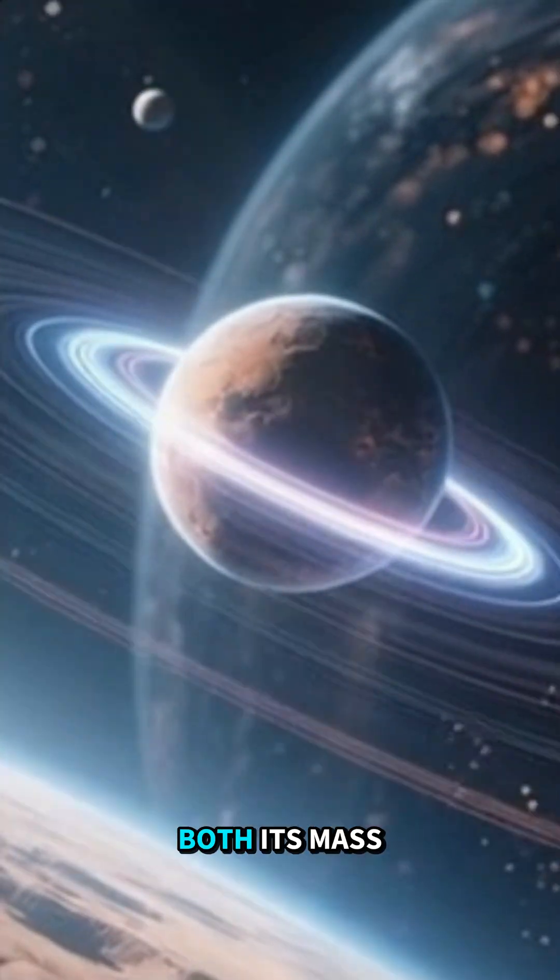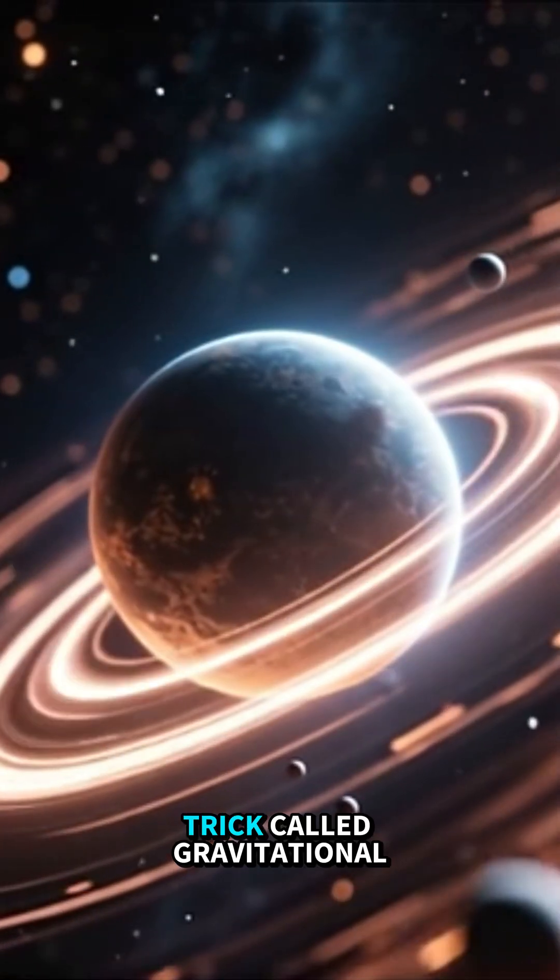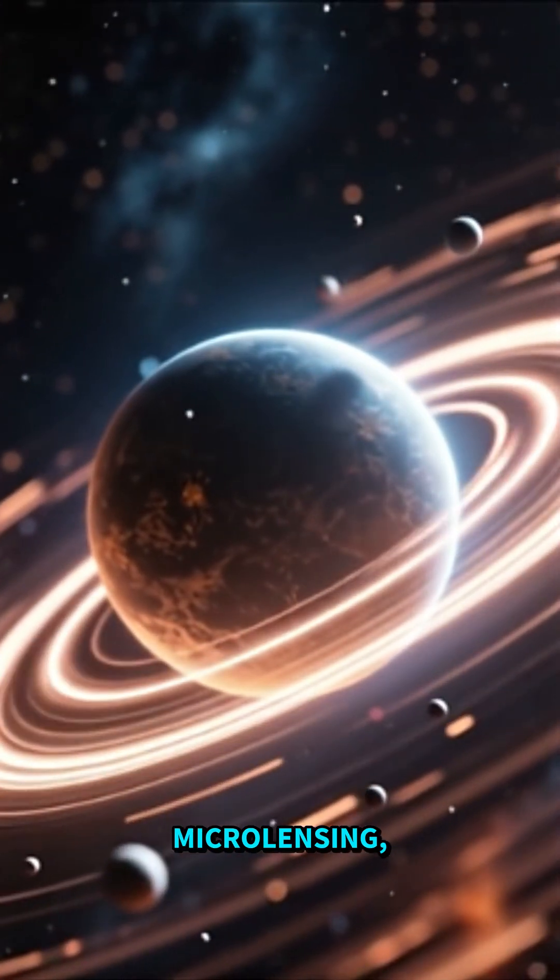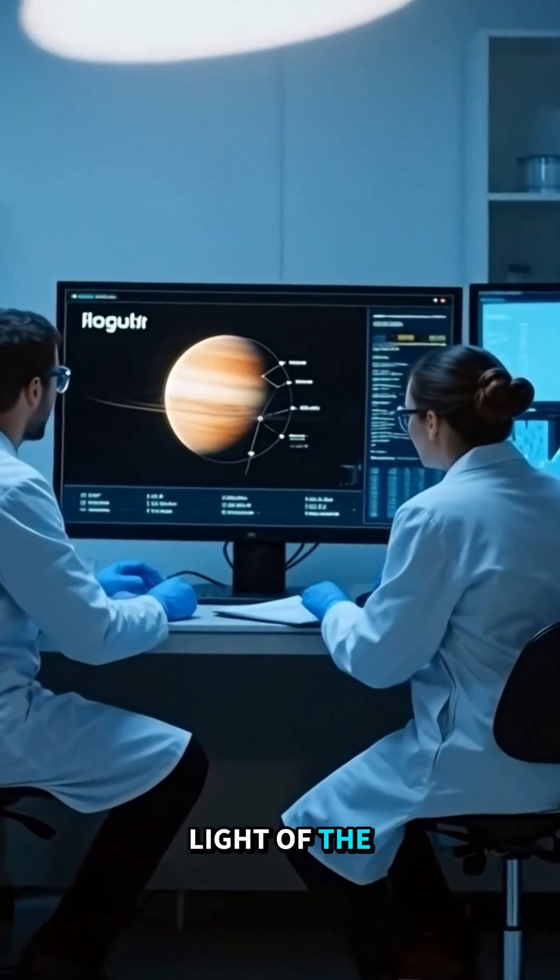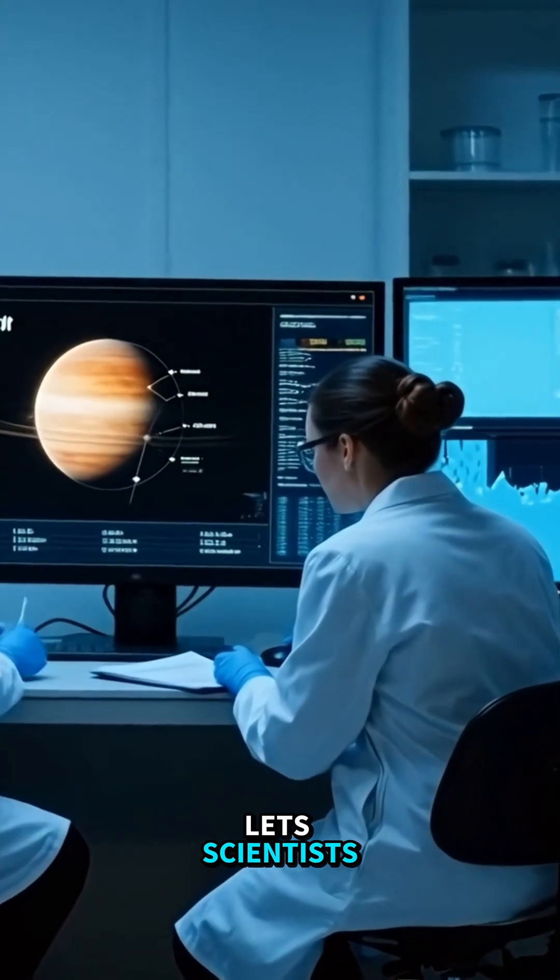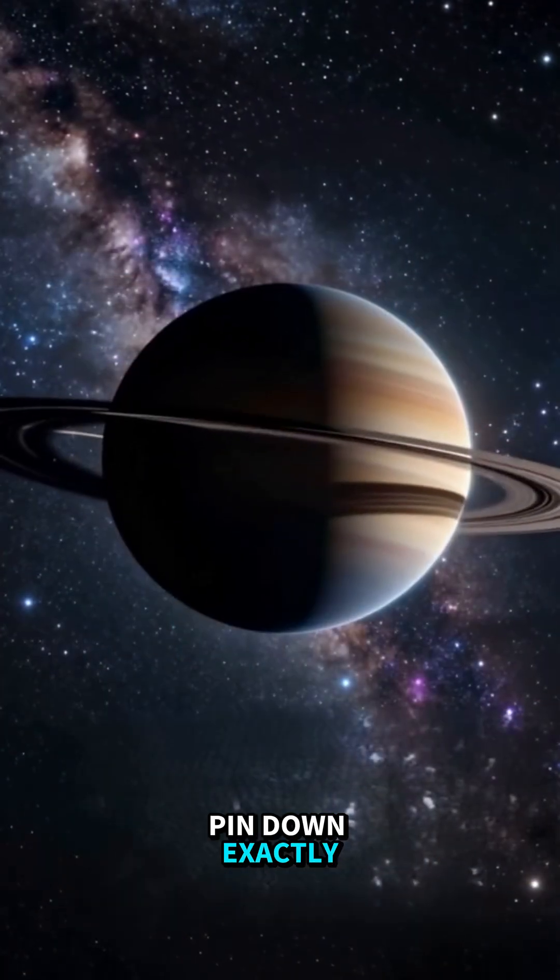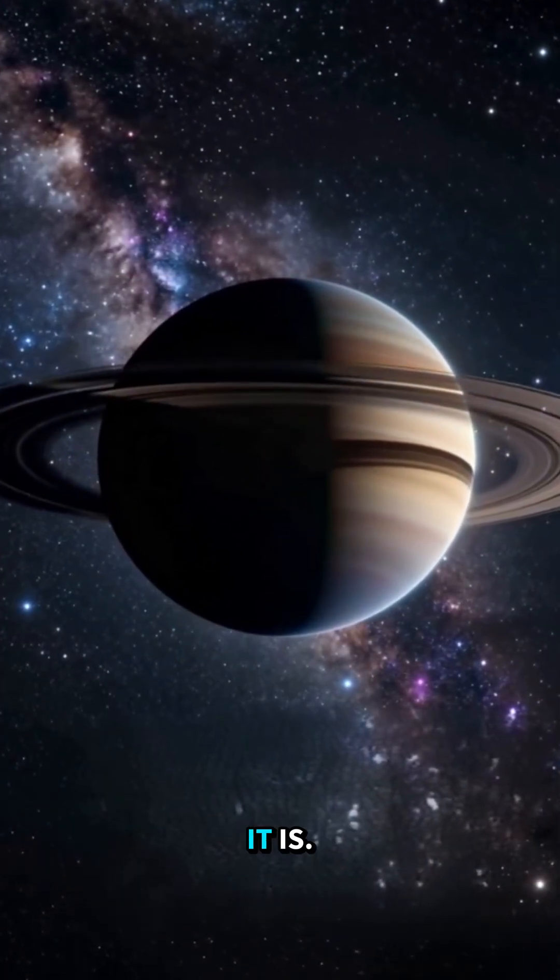Astronomers could measure both its mass and distance, a first for a rogue planet, thanks to a clever trick called gravitational microlensing, where the planet's gravity bends and brightens the light of a background star. This unique signature lets scientists pin down exactly where it is and how hefty it is.